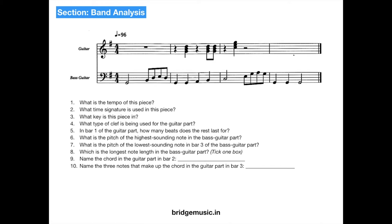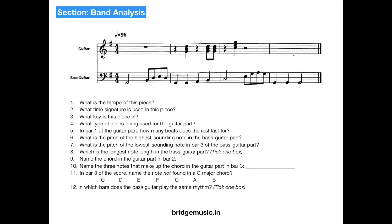Name the 3 notes that make up the chord in the guitar part in bar 3. The 3 notes are C, E, and G — and by the way, the chord is C major. In bar 3 of the score, name the note not found in the C major chord. Bar 3 contains an A note, which is not found in the C major chord. In which bars does the bass guitar play the same rhythm? Bar 1 and bar 3 have exactly the same rhythm — so the answer is bars 1 and 3.